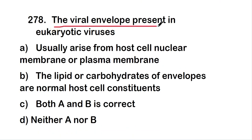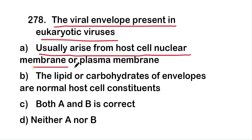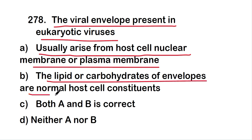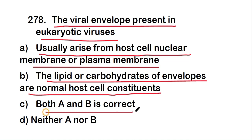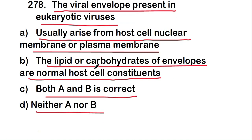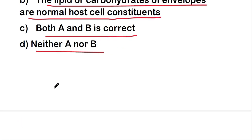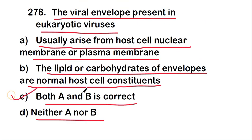The next question: the viral envelope present in eukaryotes usually arises from — host cell nuclear membrane or plasma membrane; the lipid or carbohydrate of envelopes are normal host cell constituents; both A and B; or neither A nor B? The right answer is option C — both A and B. The viral envelope arises from the host cell nuclear membrane or plasma membrane, and its lipid or carbohydrate constituents are normal host cell components.